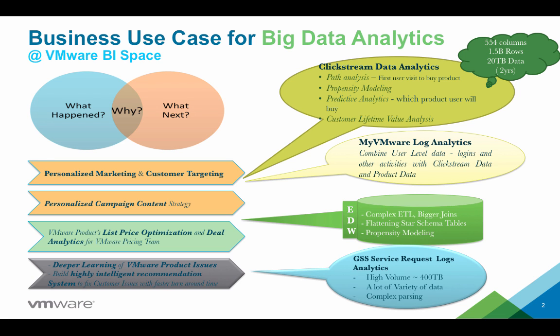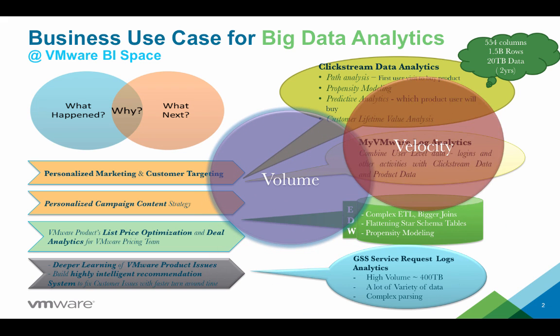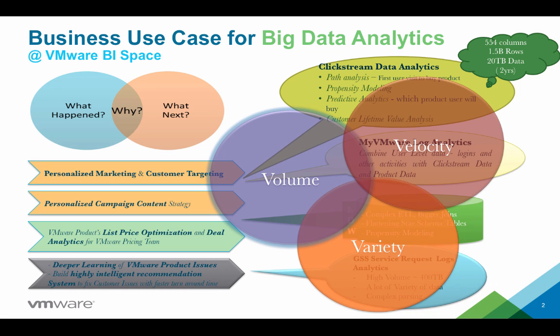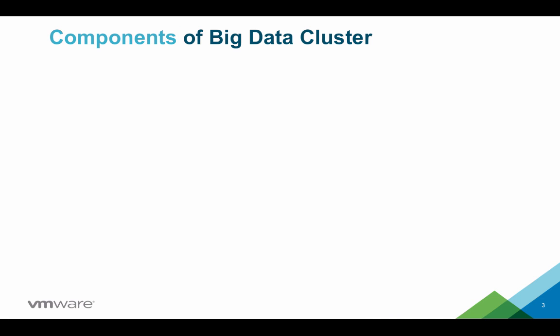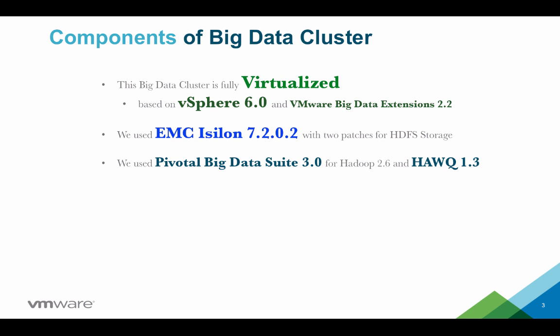We need GSS service request log analytics. It has high volume of data, a lot of variety of data, and complex parsing. We have high volume of data coming with bigger velocity and a lot of variety. To analyze this big data, we have created a big data cluster which is completely virtualized. We used vSphere 6.0 and VMware Big Data Extension 2.2 to provision VMs, and EMC Isilon 7.2.0.2 with a couple of unreleased patches for HDFS storage. We used Pivotal Big Data Suite 3.0 with Hadoop 2.6 and HAWQ 1.3 for SQL on Hadoop.